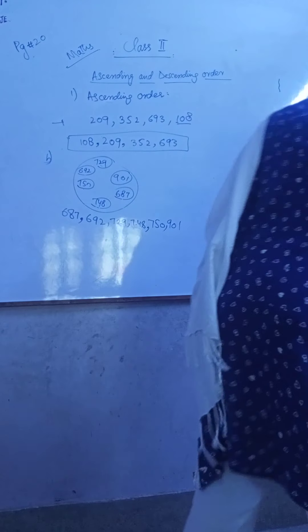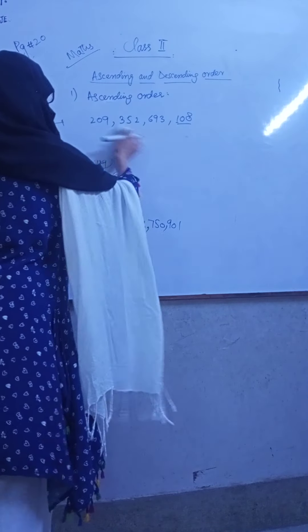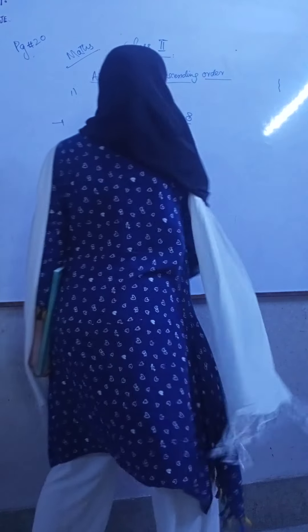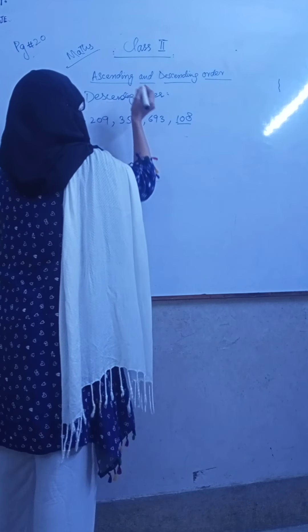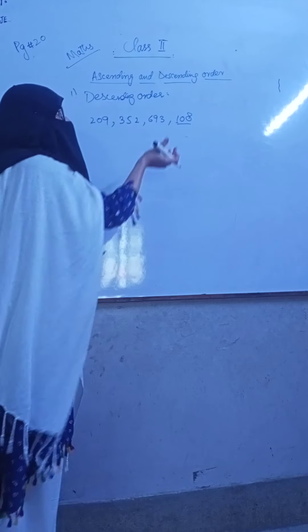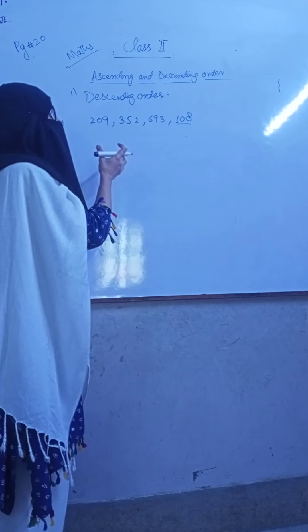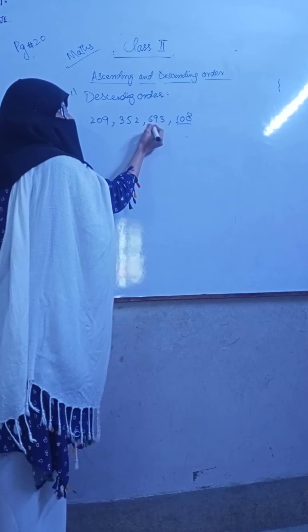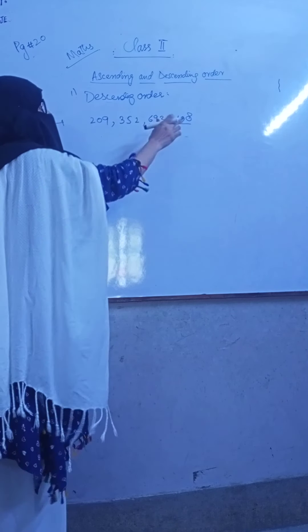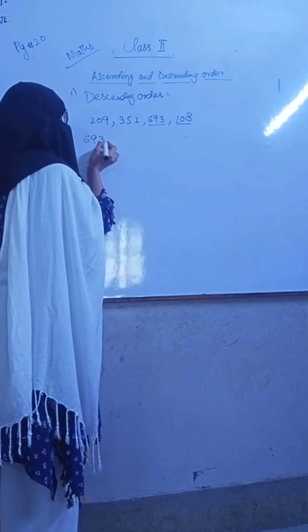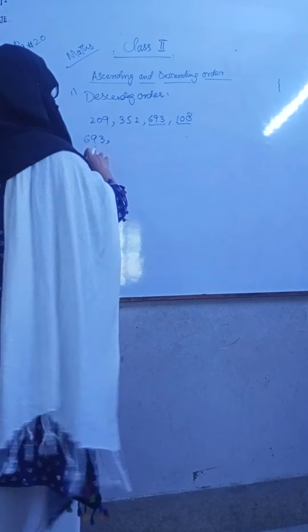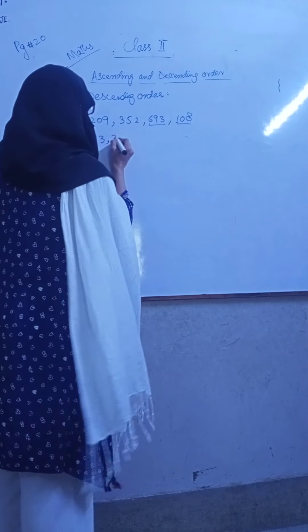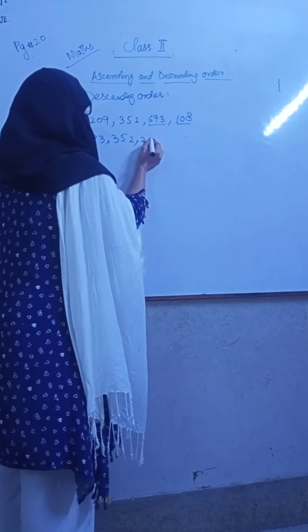And what is descending order? This is the question for descending order. Descending order means we start from the largest number. If we have the largest number, it's the biggest value among these. So here we have 693. Because it's descending order, we start the largest number. 693, then we go to 352, 209.